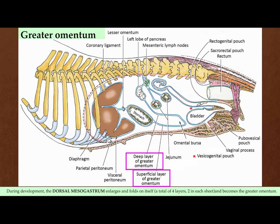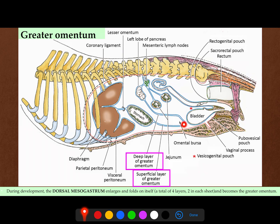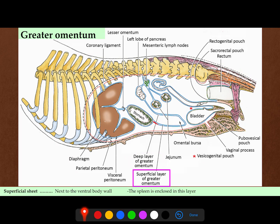Here is another view showing the layers of the greater omentum: this is the superficial layer of the greater omentum, and this is the deep layer of the greater omentum. Then here is the left lobe of the pancreas, and the rest reaches the dorsal wall of the abdomen. The cavity between the superficial layer and the deep layer is called the omental bursa, or bursa omentalis.